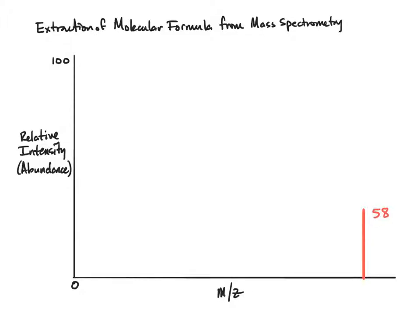In this example, we're given a data point at a mass to charge ratio of 58. Conceptually, you can think of that number as 58 grams per mole. With that information of m to z equal to 58, what do we want to do? We want to convert 58 into a molecular formula.